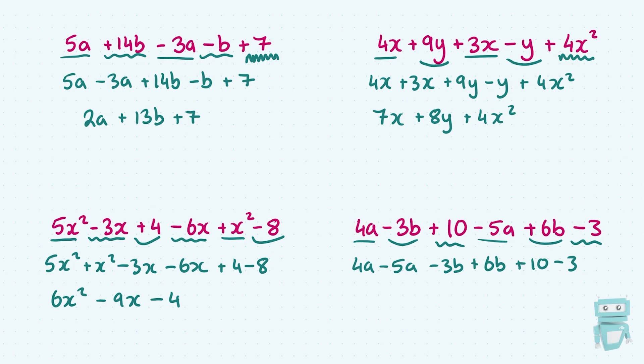So I've got my 4a minus 5a, which is minus 1a, which I can just call minus a. Then I've minus 3b plus 6b, which gives me plus 3b. And then I've plus 10 minus 3, which is plus 7. And this here is my answer.